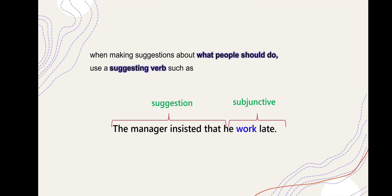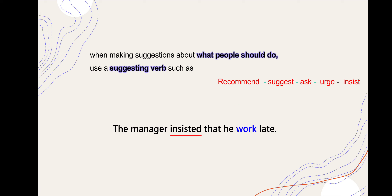When making suggestions about what people should do, use a suggestion verb such as: recommended, suggest, ask, argue, insist. هذه كلها الأفعال إذا جات في بداية الجملة وجاكي بعدها 'that' + subject، الفعل لازم يكون مجرد. ممكن نقول: the manager asked / argued / insist that - وفي كل الحالات الفعل الثاني مجرد.